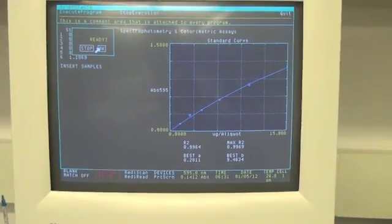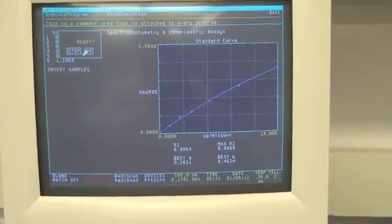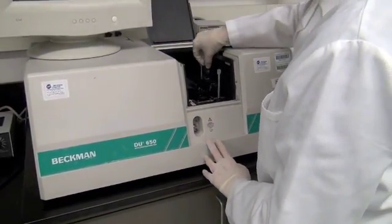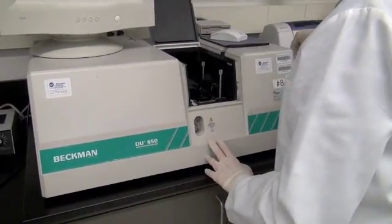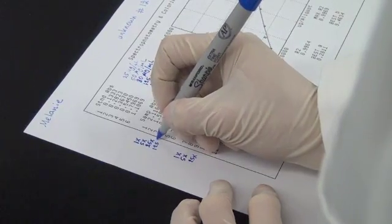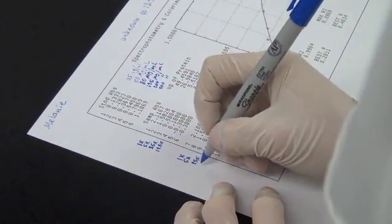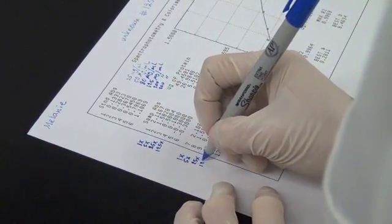When you have determined that your standard curve appears acceptable, then place the first set of unknown samples in the spectrophotometer based on the order in which you added the dye. Be sure to remember the order and record this on your printed datasheet after you have completed the assay.